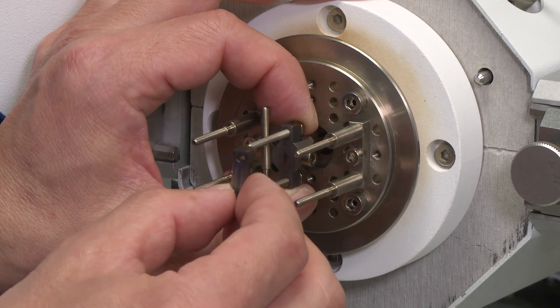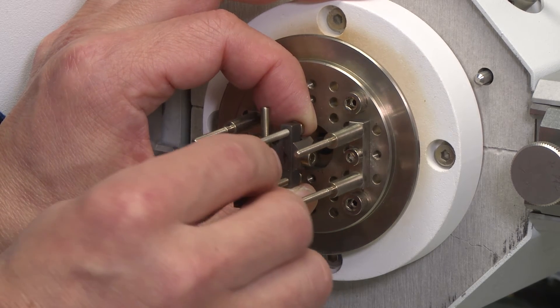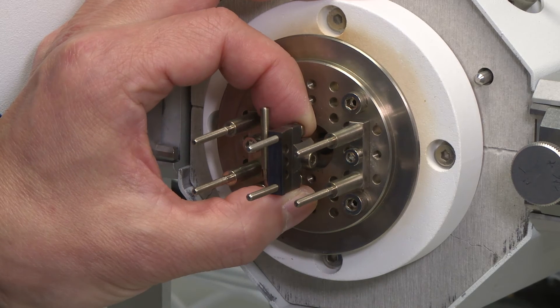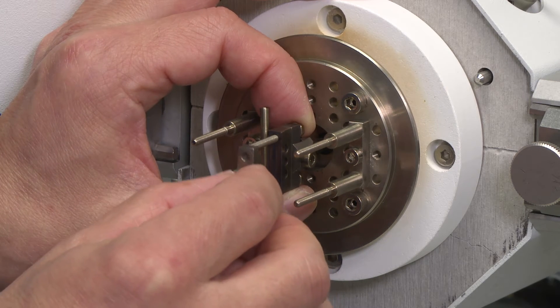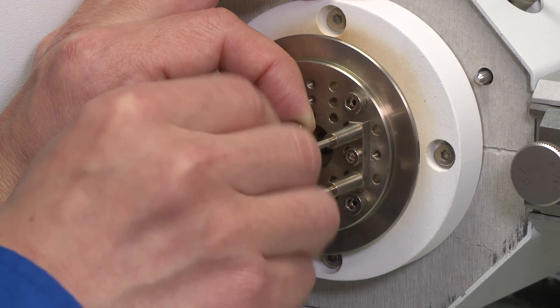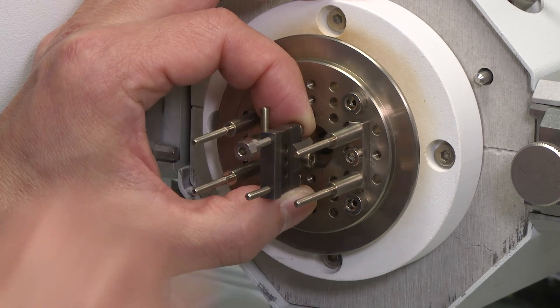First, you want to install the T-bar on the drive shaft. While doing so, you want to hold the drive shaft. Make sure it's not damaged due to pushing or pulling. Just finger tight for calibration first.